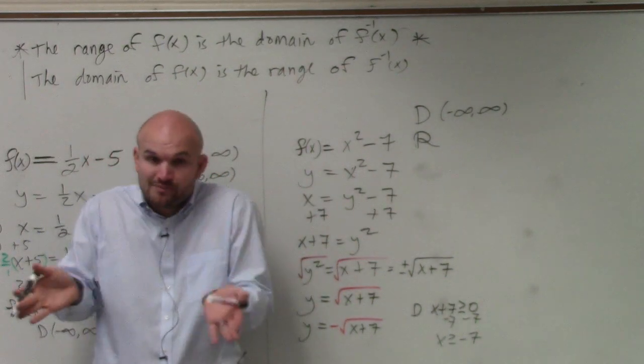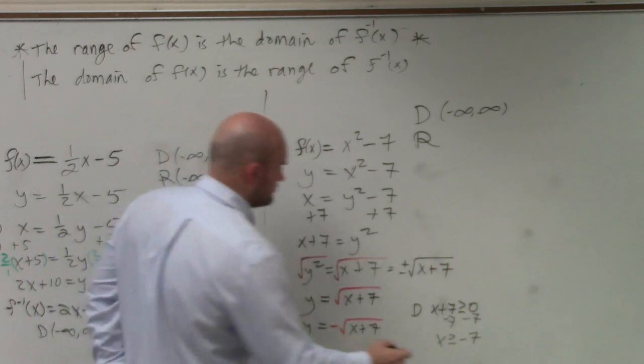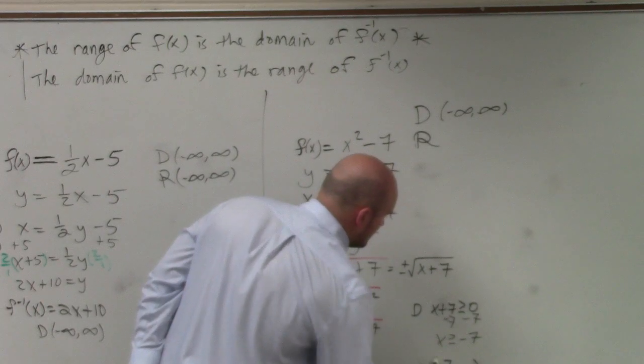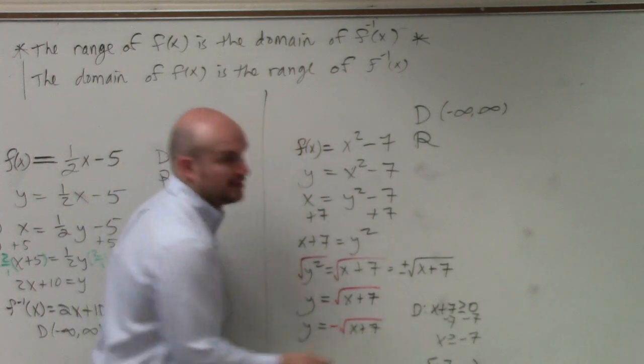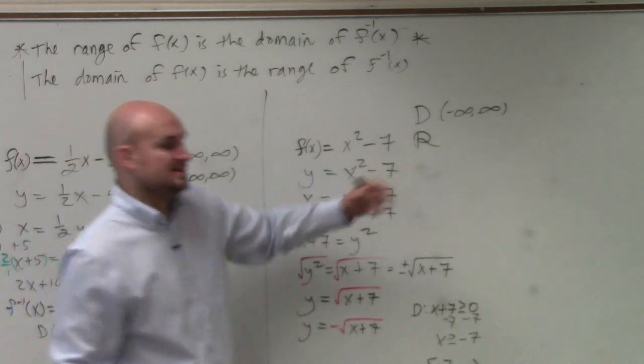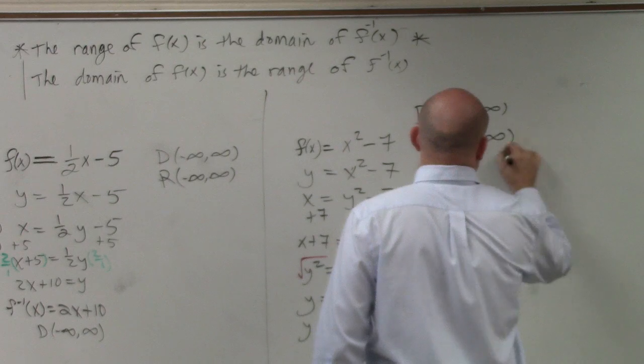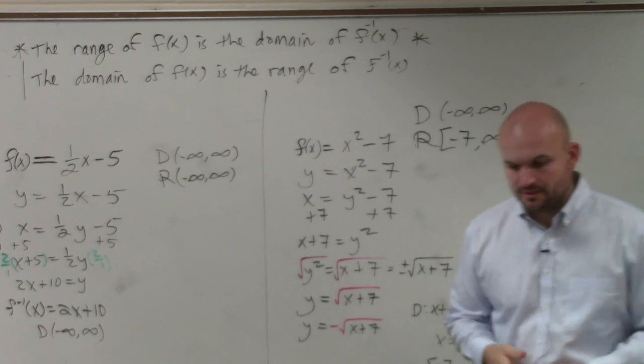Therefore, my domain is all numbers that are equal to 7, or greater. So negative 7 to infinity is my domain. Does everybody agree with that? So therefore, I can say the range is from negative 7 to infinity. OK?